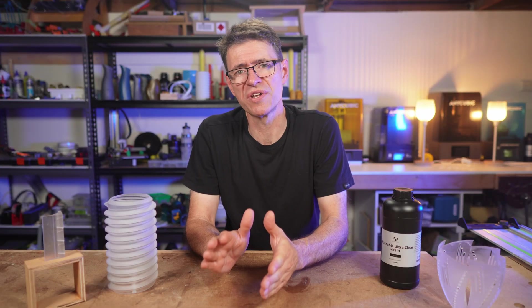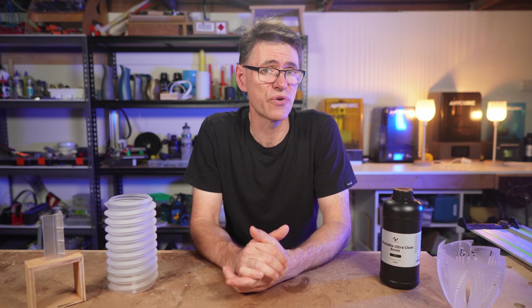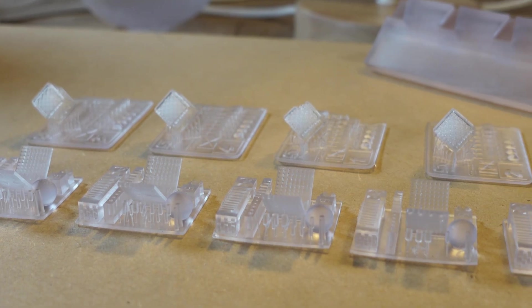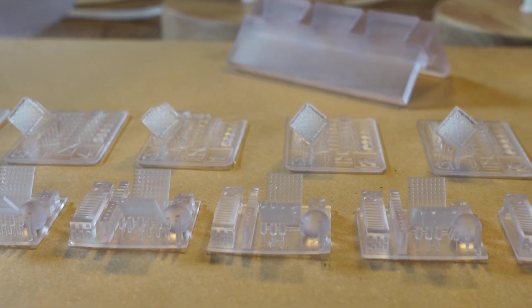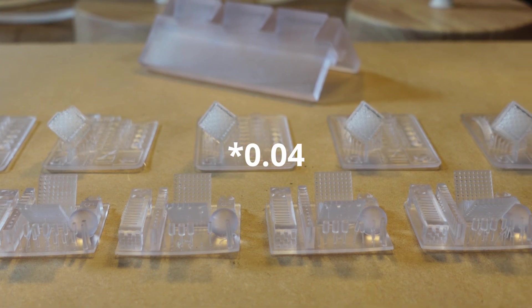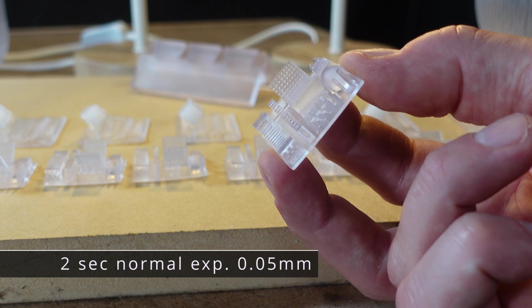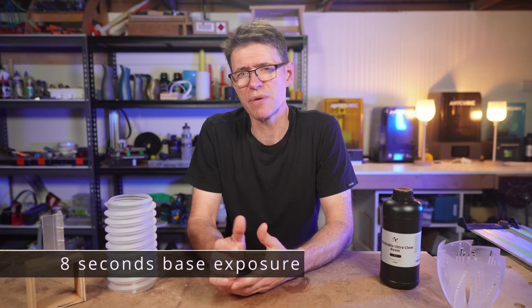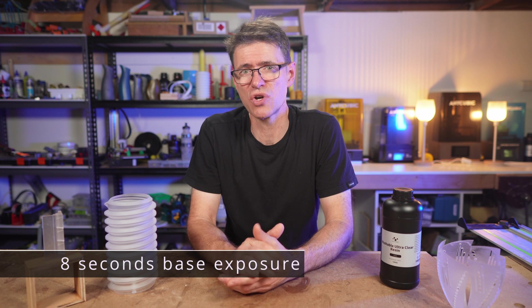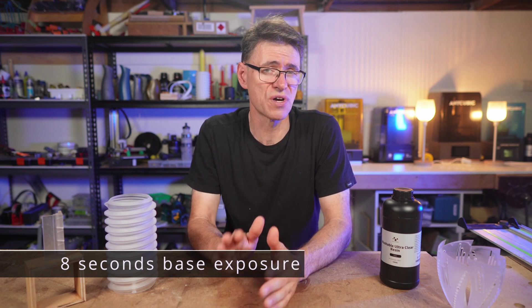Now, a quick word on exposure times. Nova 3D does provide some basic information on their website about exposure, and I found that to be quite accurate. I did experiment a bit with exposure tests, but I found that actually wasn't really necessary. They recommend 1.8 seconds for a 0.4mm layer height. I use a 0.5mm layer height, so I just rounded it up to two seconds. And all the prints worked just fine. I will say, though, that the recommended 10 second base exposure could be a little high. I found that 8 seconds was more than enough.